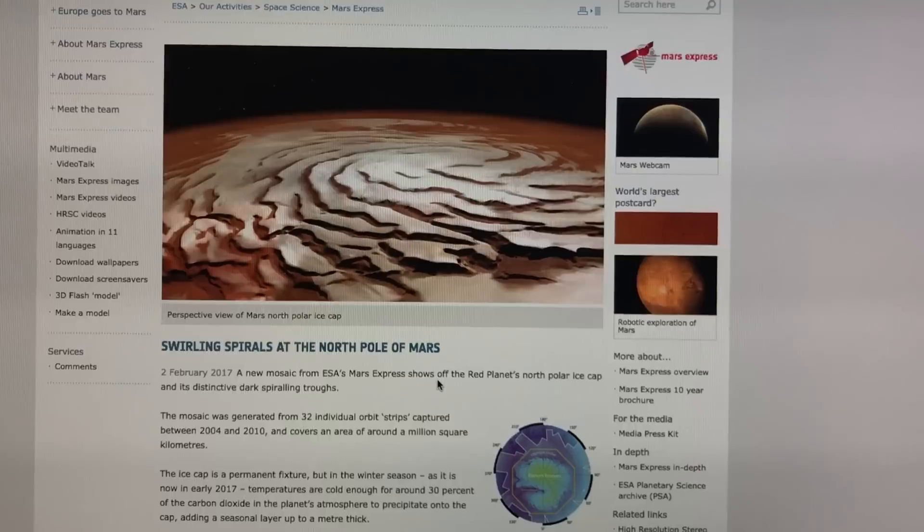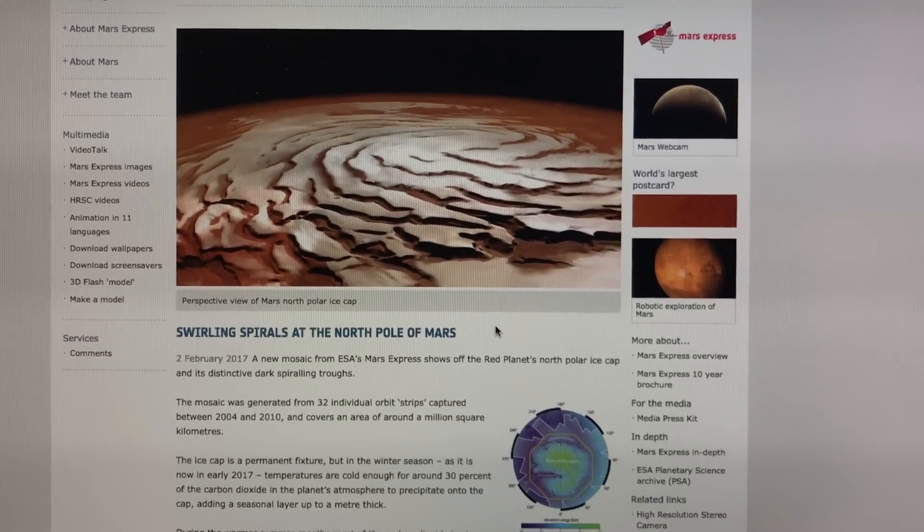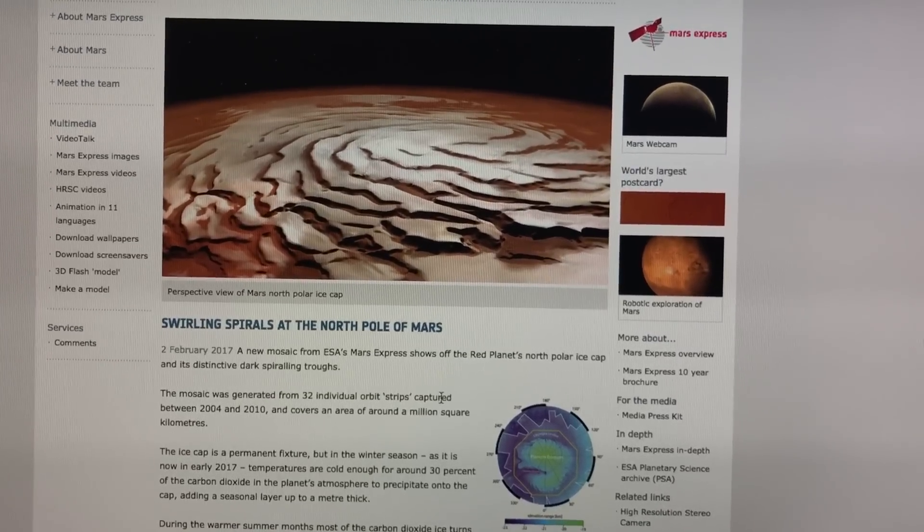Now, what's happening is that the frozen carbon dioxide is actually forming along a vortex pattern as it's being deposited on the north pole of Mars due to the magnetic field of Mars.